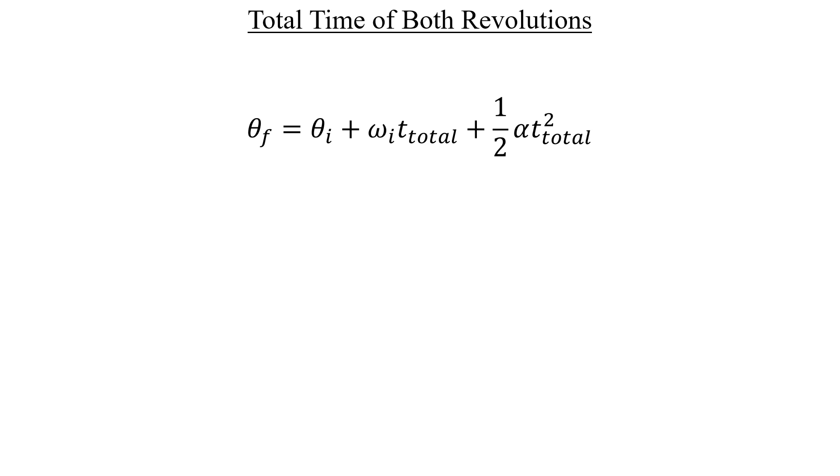What's nice is that the problem description didn't mention any kind of initial angular displacement. And we were told that the CD drive starts from rest as well. So those first two terms can go straight in the garbage. They're equal to zero, we don't need them. All we're left with is just the single term at the end.